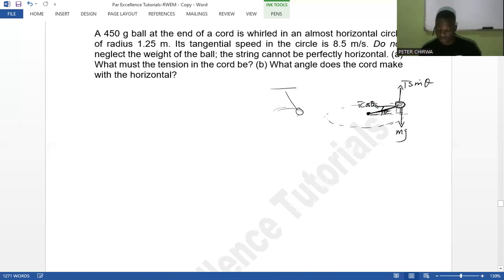We can see that the T cos θ is the one that is giving the centripetal acceleration to this ball that is moving in the horizontal. Now what are we going to have? We're going to have the summation of forces in the y. We're going to have T sin θ minus the weight being equal to zero, so T sin θ equals the weight.